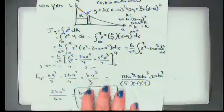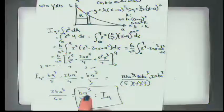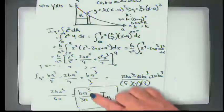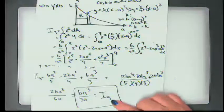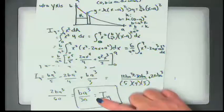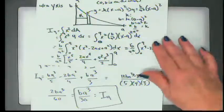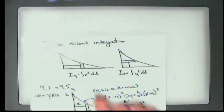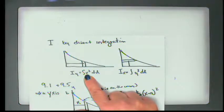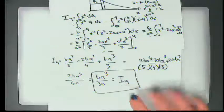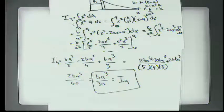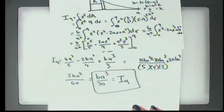So I_y = ba³/30. An important note: the units of an area moment of inertia are length to the fourth power. Here b × a³ is length to the fourth. Looking back at the original equation, x² is length squared and dA is also length squared, so length² × length² = length⁴. Your moments of inertia should always come out in dimensions of length to the fourth.